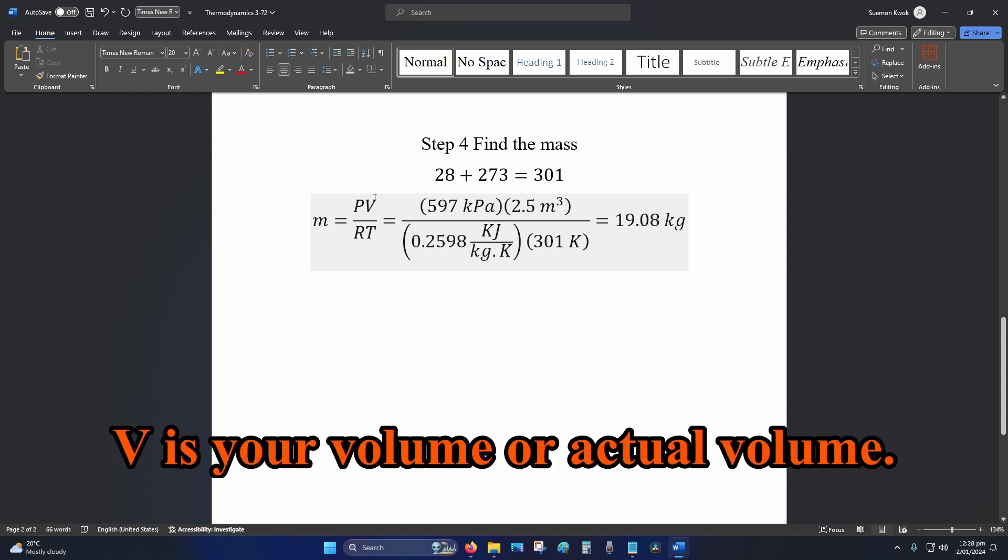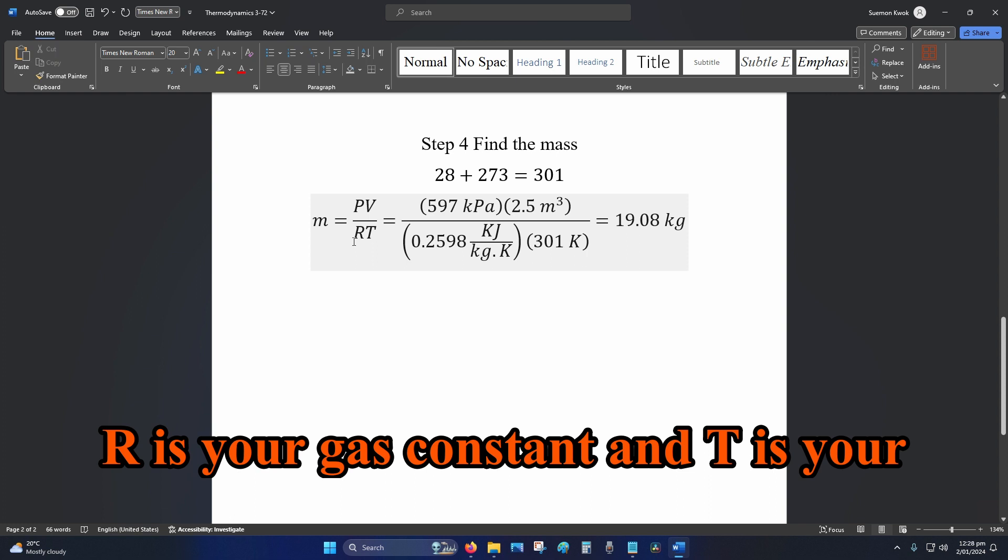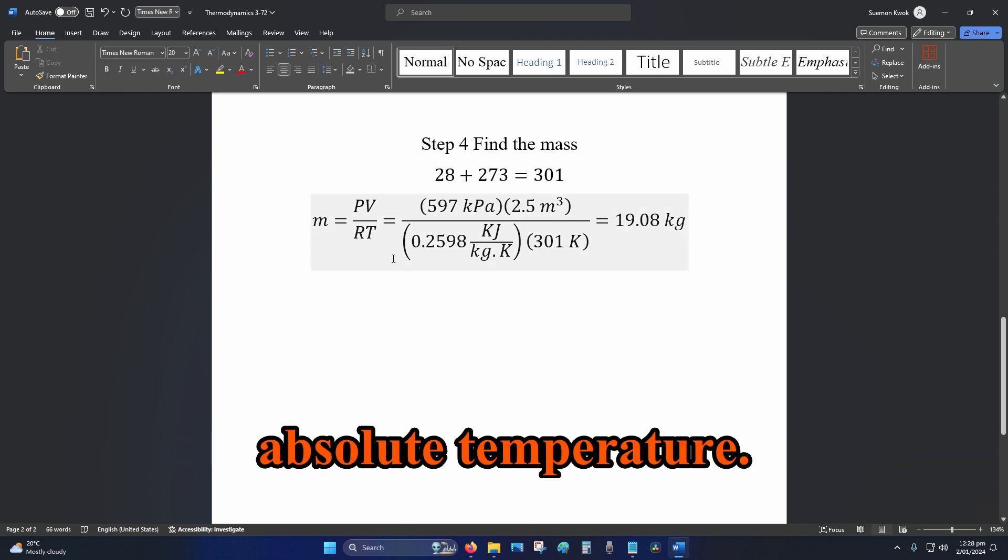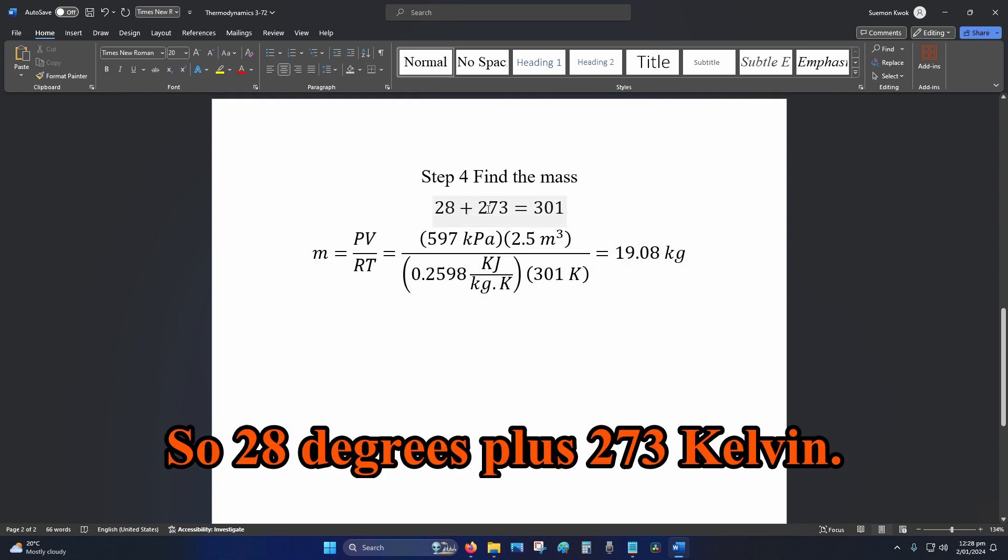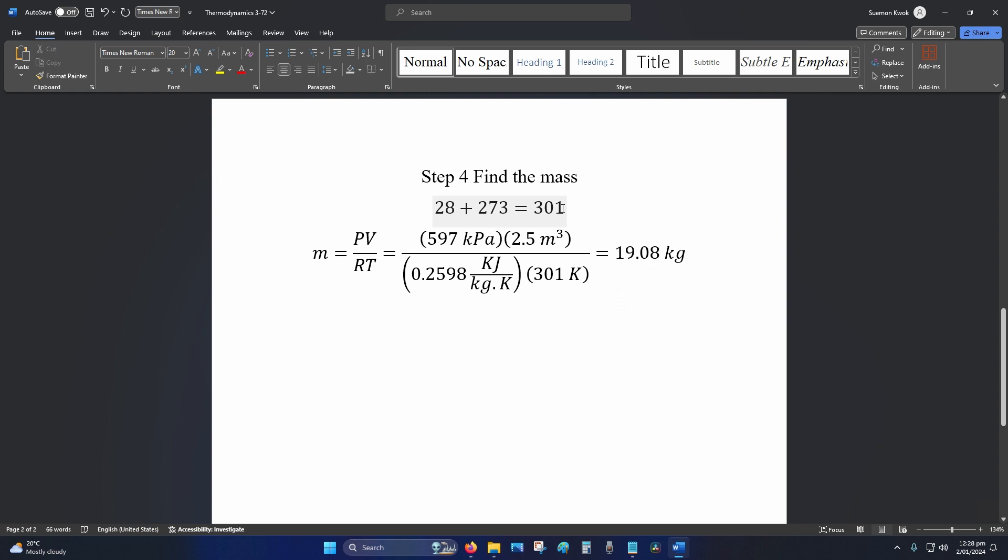V is your volume or actual volume, R is your gas constant, and T is your absolute temperature. So 28 degrees plus 273 kelvin, so that's 301 kelvin.